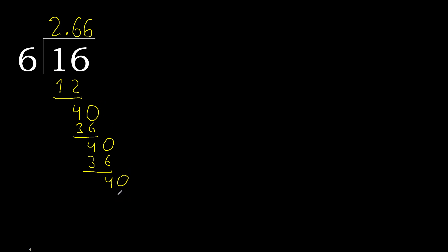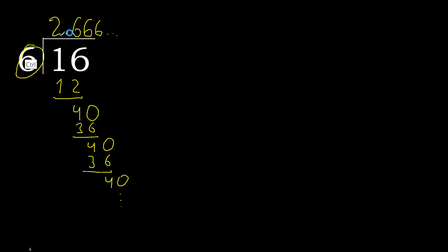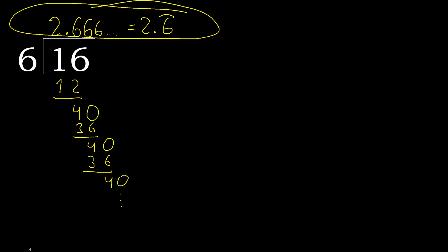Repeat, therefore repeat. Therefore 6 — repeat. Finish it. 16 divided by 6 is — after the point, repeat. After the point, 6 repeats. Repeat, repeat. Finish it.